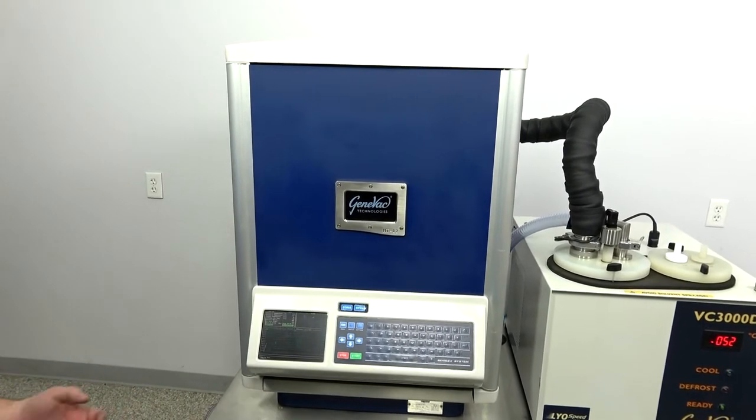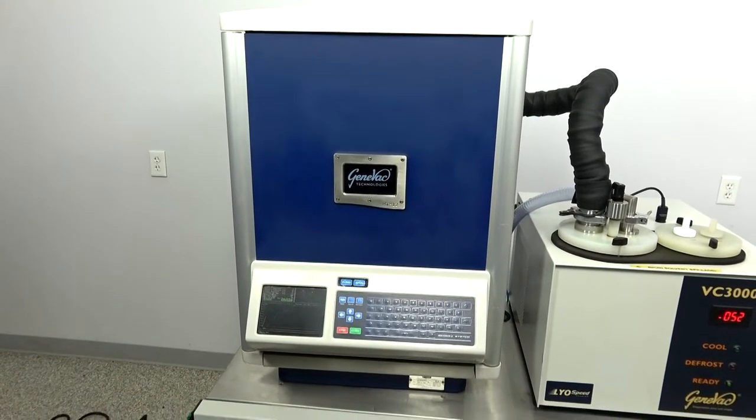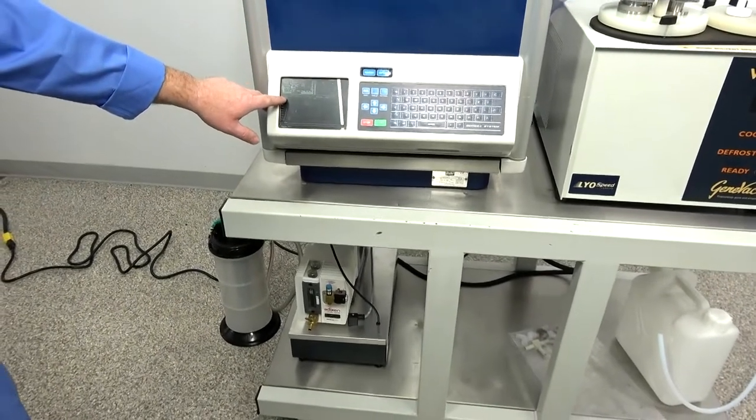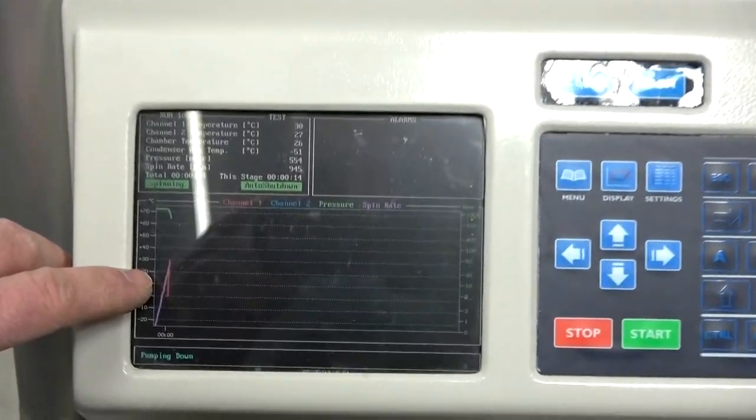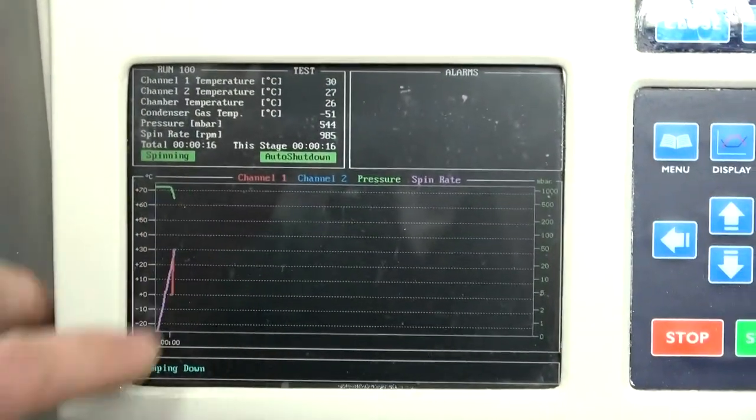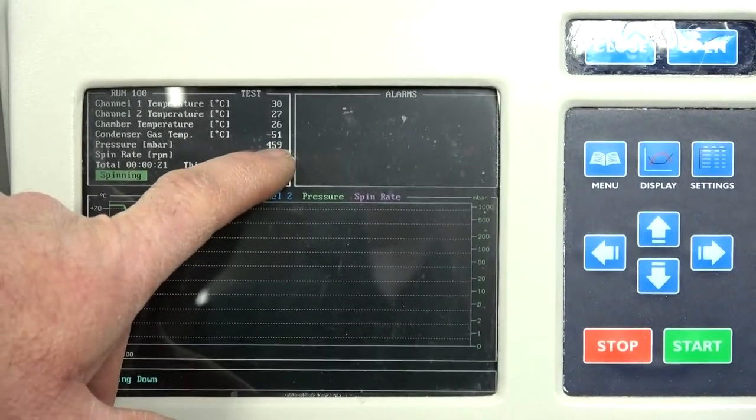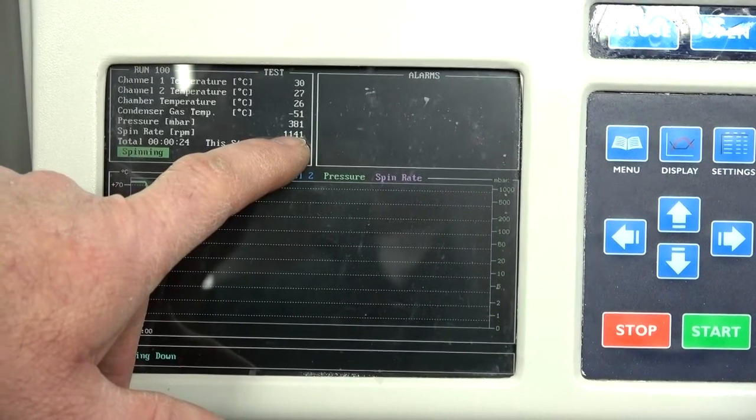But so you can see now the vacuum pump has kicked on. It's being controlled by the software. It's going to start pulling down a vacuum on the green line here on the graph. And as it speeds up, the vacuum will be pulling down. And here over here, you can see vacuum pressure lowering and the speed rising.